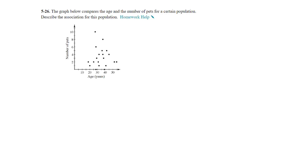On question 26, the graph compares age on the x-axis and number of pets on the y-axis for a certain population. We need to describe the association. Looking at the graph, it doesn't look like there's any association between the two variables — so there is no association between the number of pets and age.